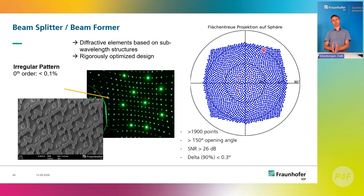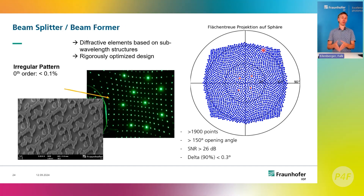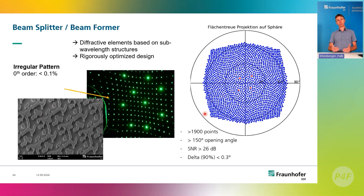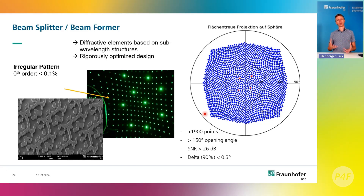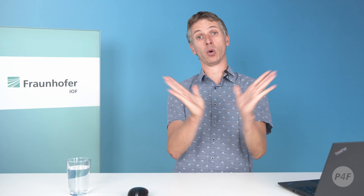On the other hand, you can also make fairly dramatic modifications to a waveform — for example, for classical diffractive beam shaping. One example is a beam splitter that turns a single incident laser beam into an array of 1,900 dots. These dots are non-periodically spaced — not on a grid — and have a very high signal-to-noise ratio and an opening angle of 150 degrees. So with a single element you take one laser beam in and get 1,900 individual beams out, all at more or less arbitrary but predefined directions.